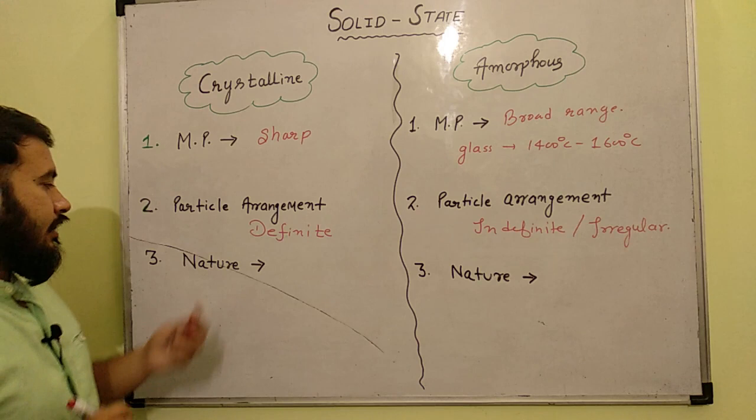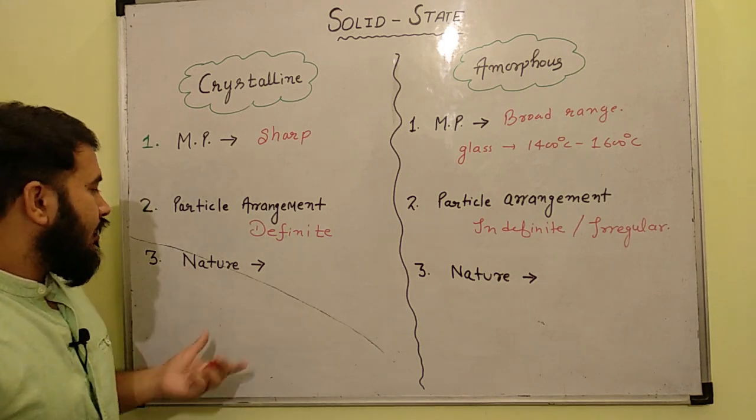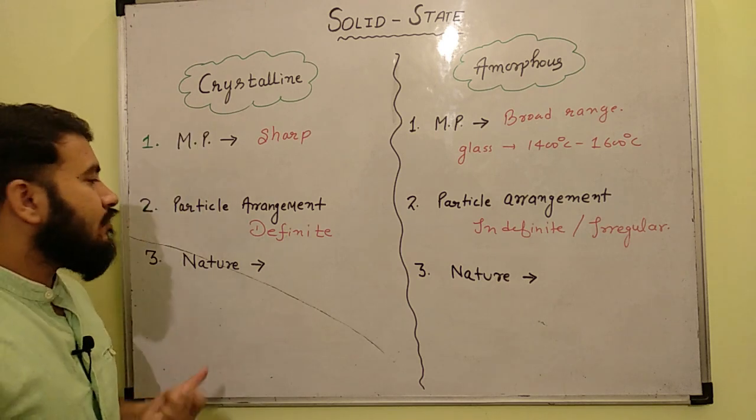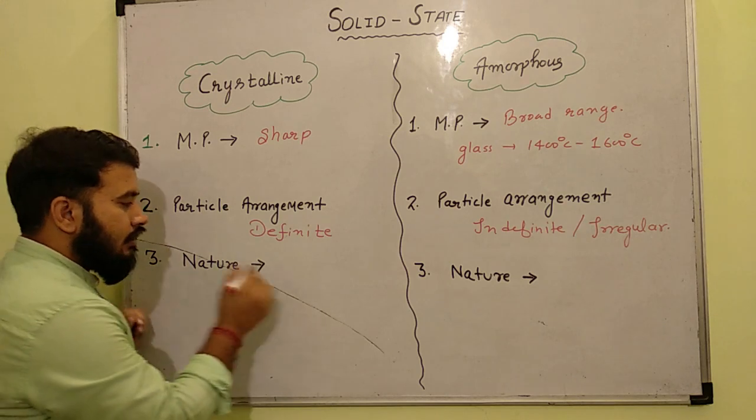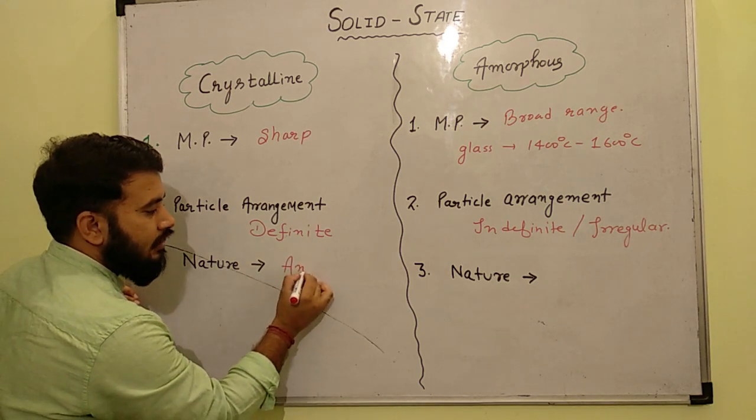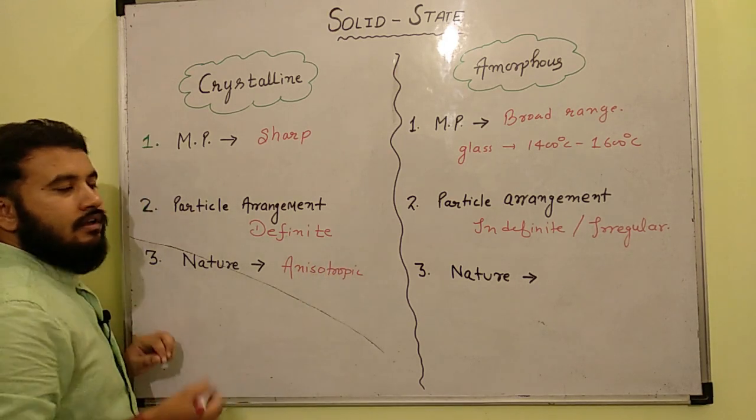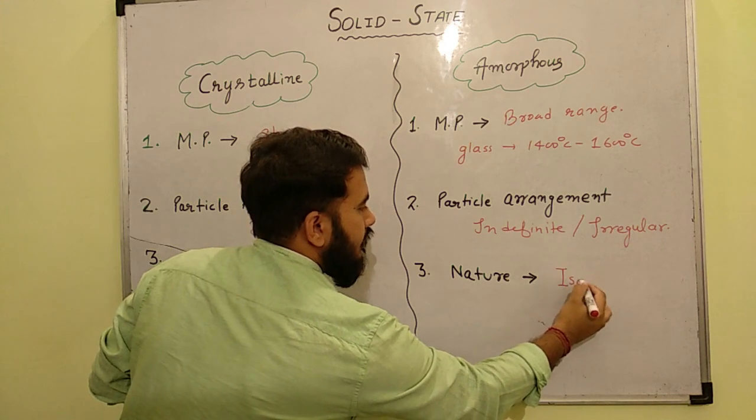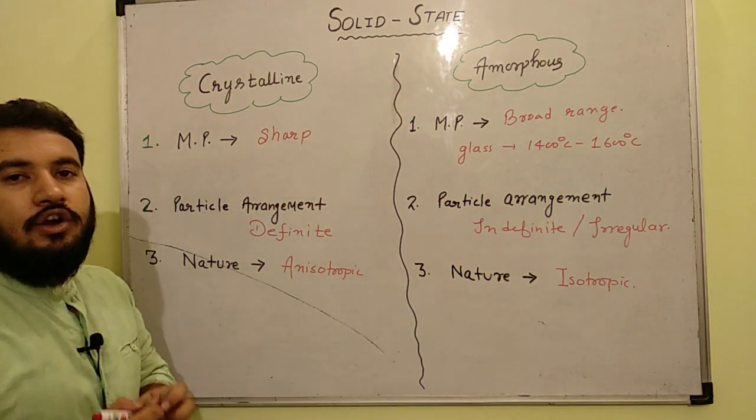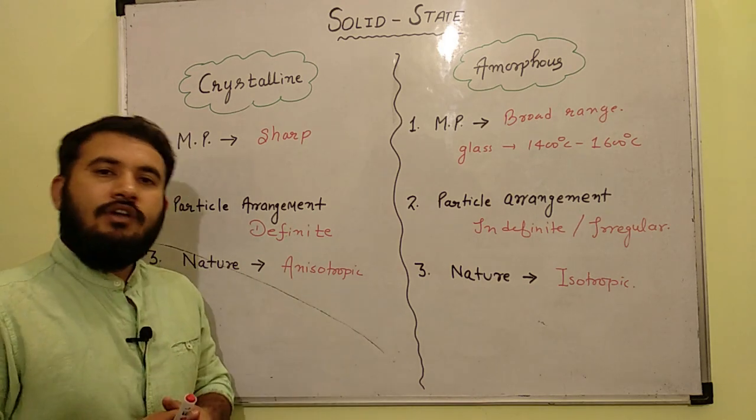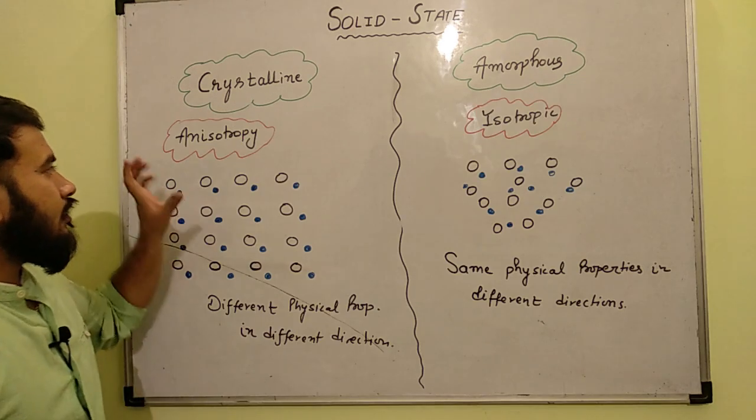Now third point, and this is very important. Board exam sees a lot of questions. So talking about nature, the nature of crystalline solid and nature of amorphous solid. Now crystalline solids are mostly anisotropic in nature. So now what is the meaning of anisotropy and isotropy. So here we are going to discuss anisotropy and isotropy.